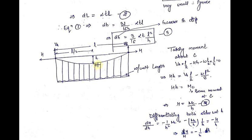When I take the moment about C equal to zero, either I can take the left part or the right part of the point. In this equation I have used the left part of point C. If you see the left part, there are three forces: VA acting upward, the horizontal thrust H, and the UDL. Taking clockwise as positive and anticlockwise as negative.